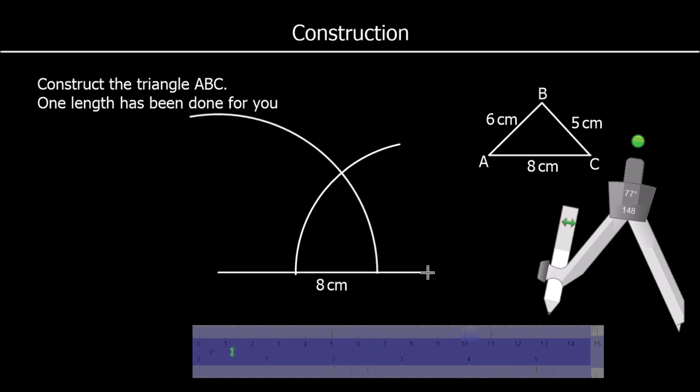So we join up C to B to A, and that is our triangle.